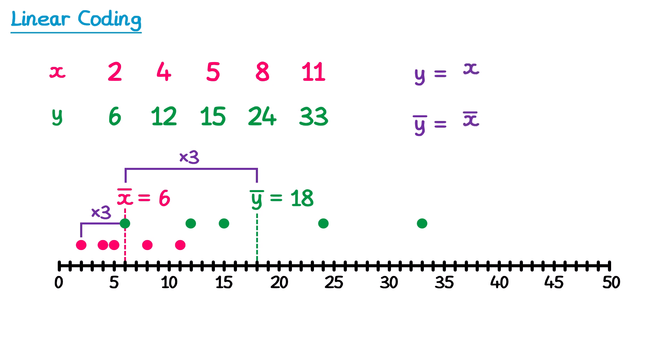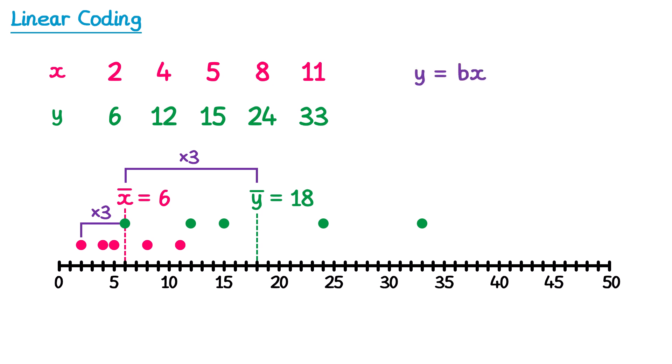This also works for division. So if we coded by dividing all of the values by 2, the new mean would be half of the old mean. More generally, if we coded by multiplying by a value b, then the coded mean will be b multiplied by the old mean. And if we coded by dividing by a value b, then the coded mean will be the original mean divided by b.